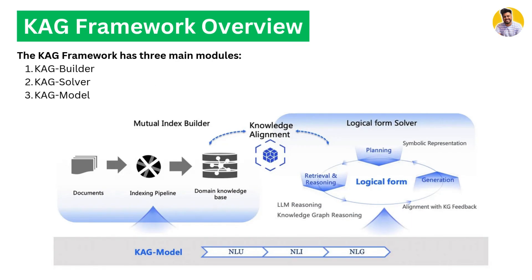In CAG we have three main modules: the first is called the CAG Builder, then the CAG Solver, and then the CAG Model. The CAG Model contains the natural language understanding and natural language generation parts as well.